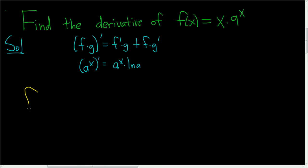So f prime of x. We're thinking of this as the first piece and this as the second piece. The derivative of x is 1. That's the derivative of the first times the second plus the first piece, which is x,